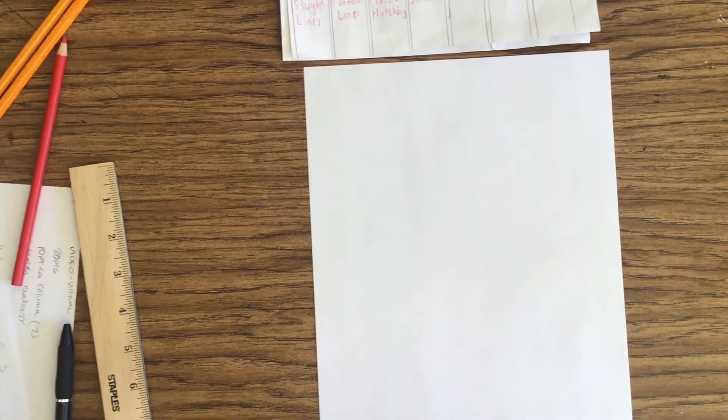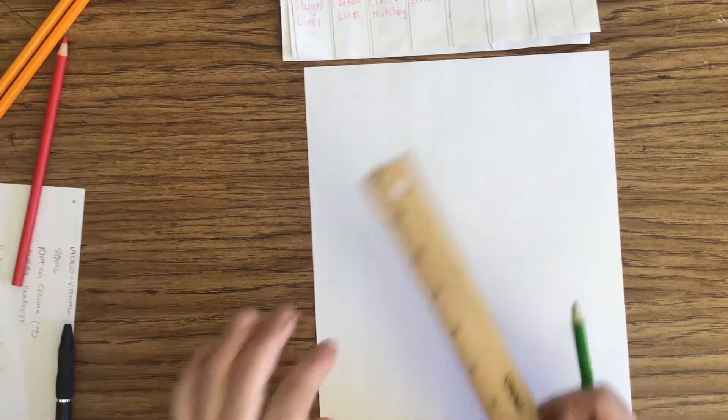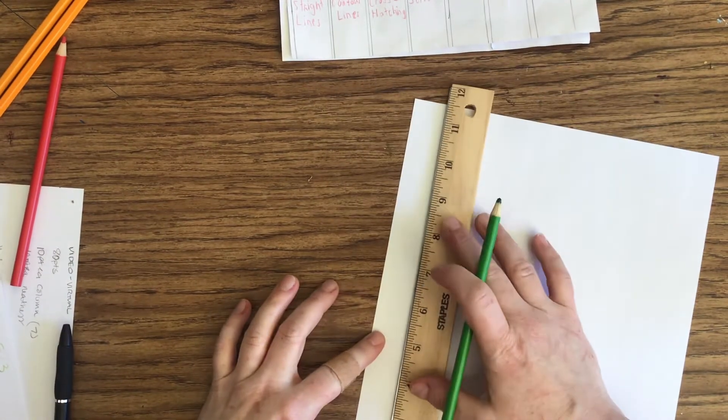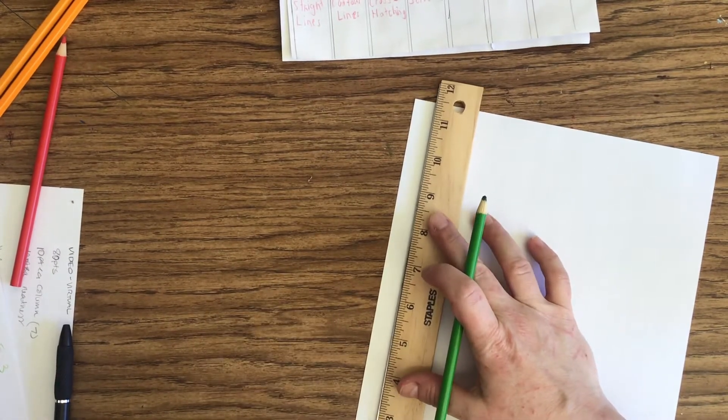Okay, so here we are for value scale number four. This is just like value scale two, the same type of line.